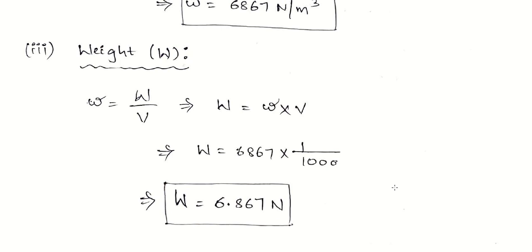Everything in this topic rotates around three properties: density, weight density, and specific gravity. You must be very clear in applying the right formula based on what is given. If you know only one formula for specific weight as weight by volume but the question gives rho and g, you must also know w = rho × g. Learn all sub-formulas. For doubts, contact via email or comment. Stay tuned for the next video on another important fluid property.